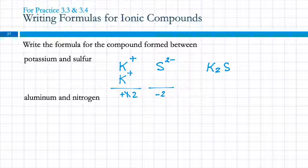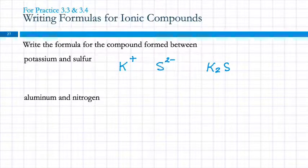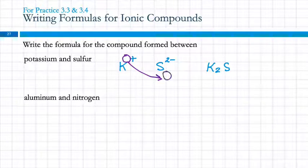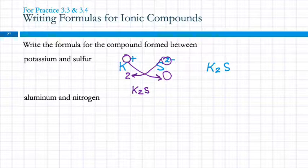The other method is called crisscross. Students like this because you don't have to think very much, and it works most of the time — but you have to be careful. You can use the crisscross method when the numbers are not the same. Here we have one and two, so take the one (the unwritten subscript for K) and it becomes the subscript for S, and the two becomes the subscript for K. That gives K2S.